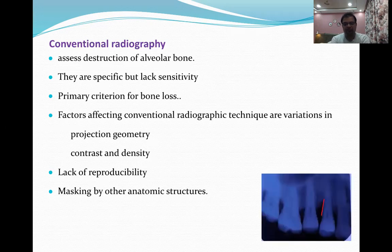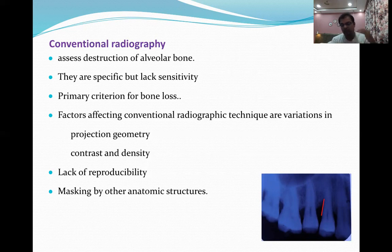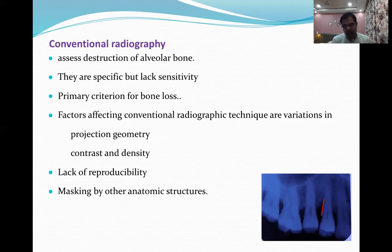On a conventional radiograph you can make out the level of the bone. We describe bone level in periodontal disease in relation to root length. For example, the bone level on the first premolar is at the junction of the middle and apical third of the root on the distal aspect, whereas on the second premolar it is at the junction of the middle and cervical one-third. Radiographic bone levels are always measured and described in terms of relative position to the root of the tooth.